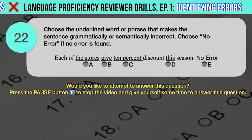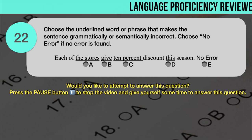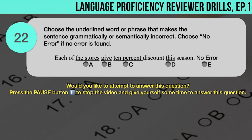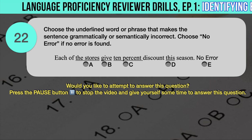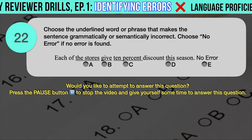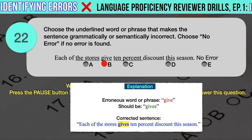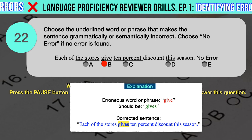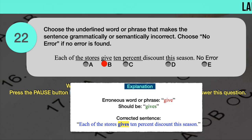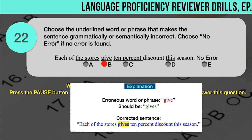Drill question number 22. 'Each of the stores give 10% discount this season.' The underlined words are: A. Stores, B. Give, C. Ten percent, D. This. The correct answer is B. 'Give' should have been 'gives.' This is a classic subject-verb disagreement: the plural verb 'give' should be changed to its singular form 'gives' to match the singular subject 'each of the stores.' Correct sentence: Each of the stores gives 10% discount this season.